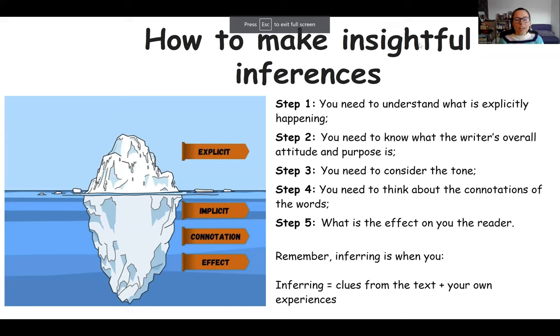So how to make insightful inferences. I love the iceberg analogy. An iceberg is a huge block of ice essentially. You can see the tip of it, and that's what we call the explicit, the obvious happenings, the obvious meaning. But if we look below the surface, that is what we can imply. It's the implicit meaning. And this is what we have to infer.